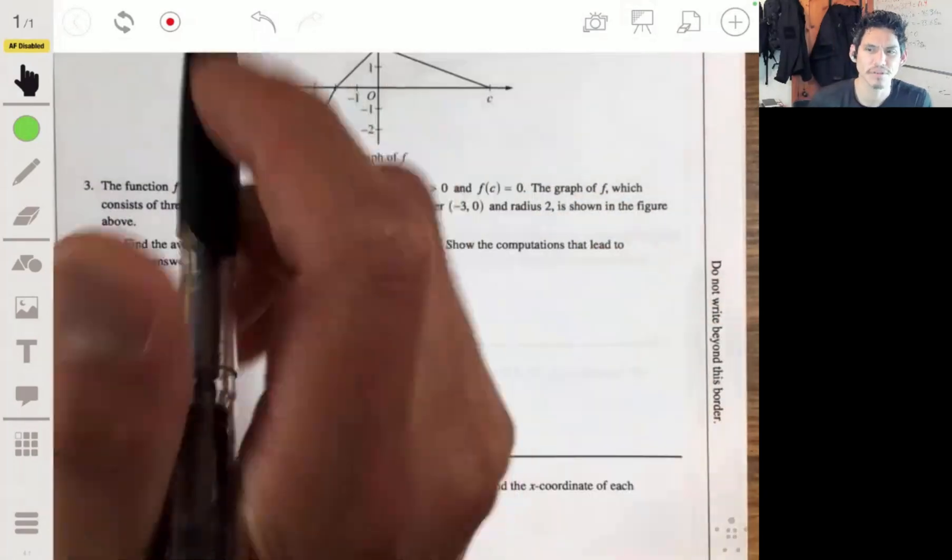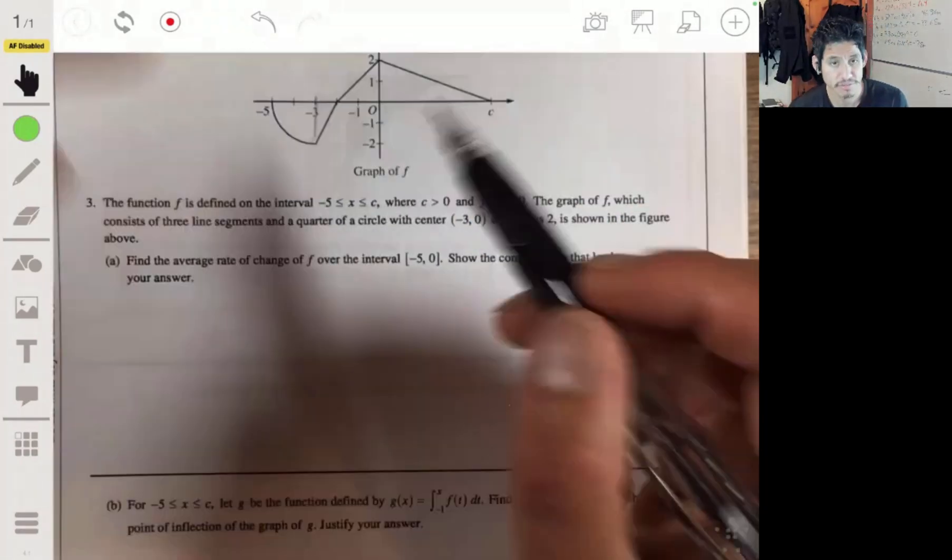Okay, problem three of the free response section of the 2016 AP Calc AB, no calculator allowed. This one tended to be the hardest one for most students. So I'm going to go through it slowly and try to do my best to explain it. But just skip ahead if you find I'm going too slow.